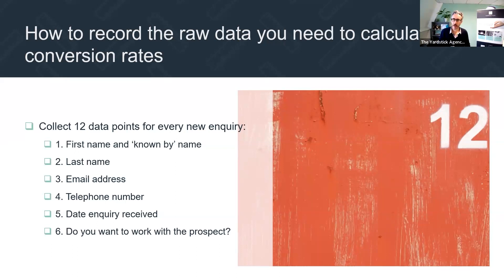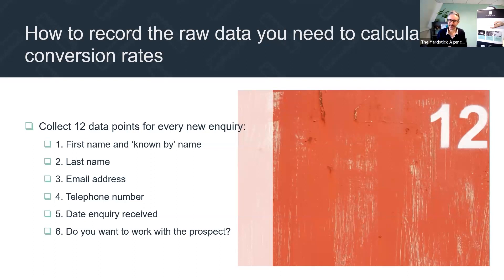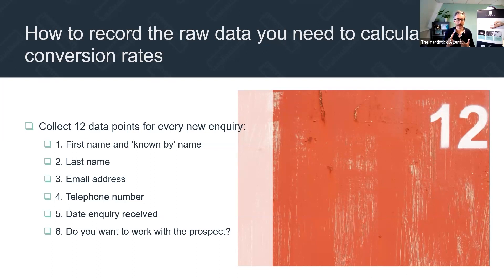The 12 data points you should record for every new inquiry: the first five are straightforward. First name and known-by name — remember these may be slightly different, so you can personalise emails. Last name, email address, telephone number, and the date the inquiry was received.